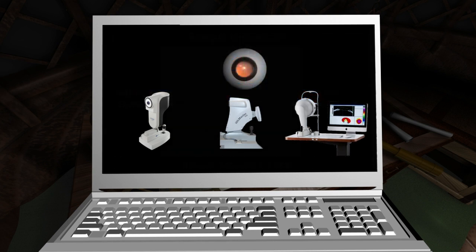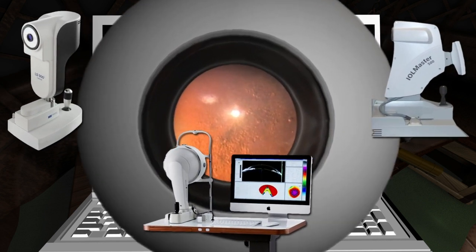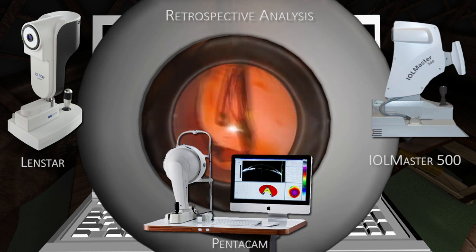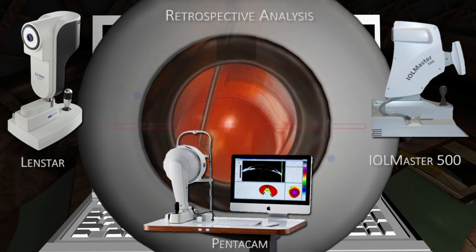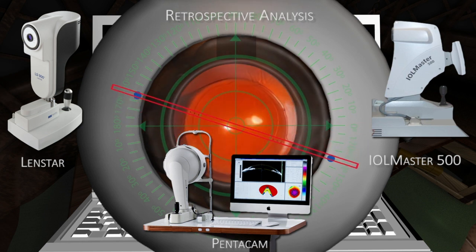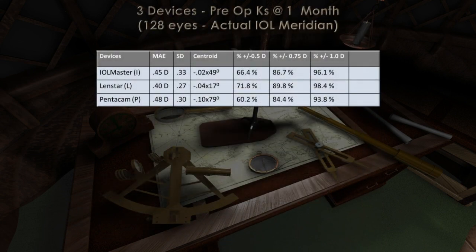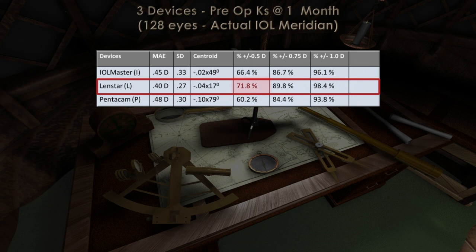In order to determine the utility of combining keratometry from multiple devices, I performed a retrospective analysis of 128 patients who had a toric intraocular lens implanted. Pre-op Ks were measured with two different biometers and a Scheinfluge topographer. The actual alignment of the toric IOL was measured at one month, and the error in predicted residual astigmatism was calculated initially using the Ks from each single device. The percentage of cases within a half-diopter of predicted residual astigmatism was highest utilizing Ks derived from the LenStar rather than the IOL-Master 500 or Pentacam in the series.